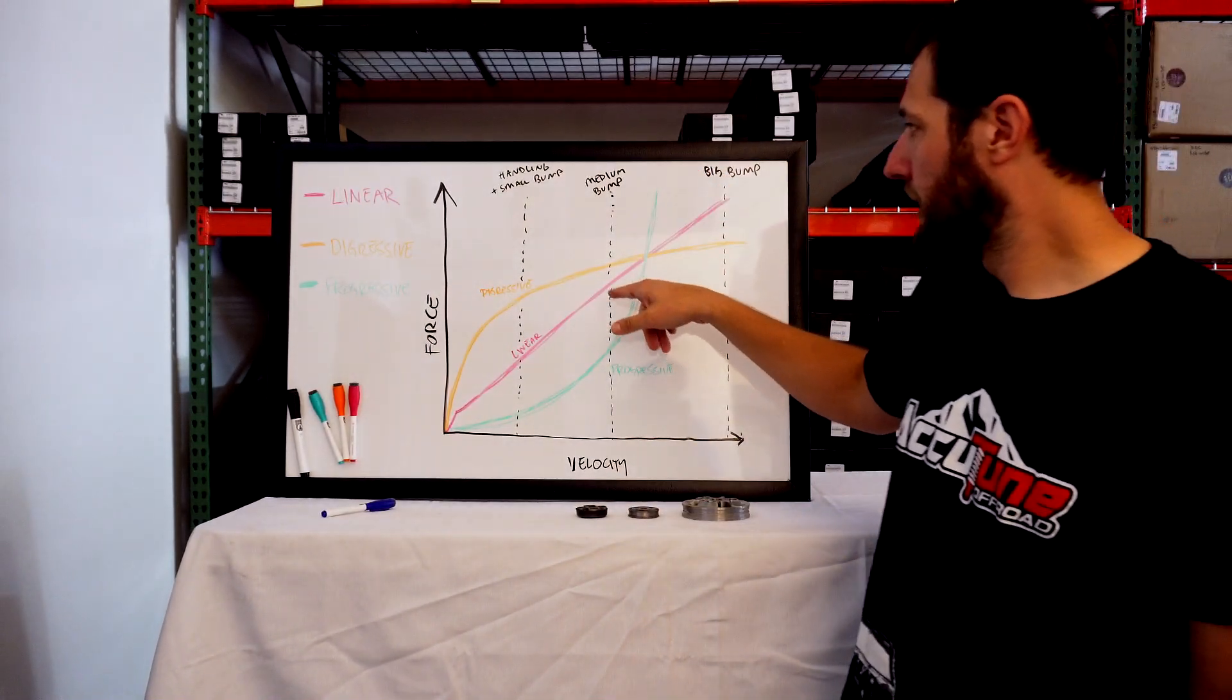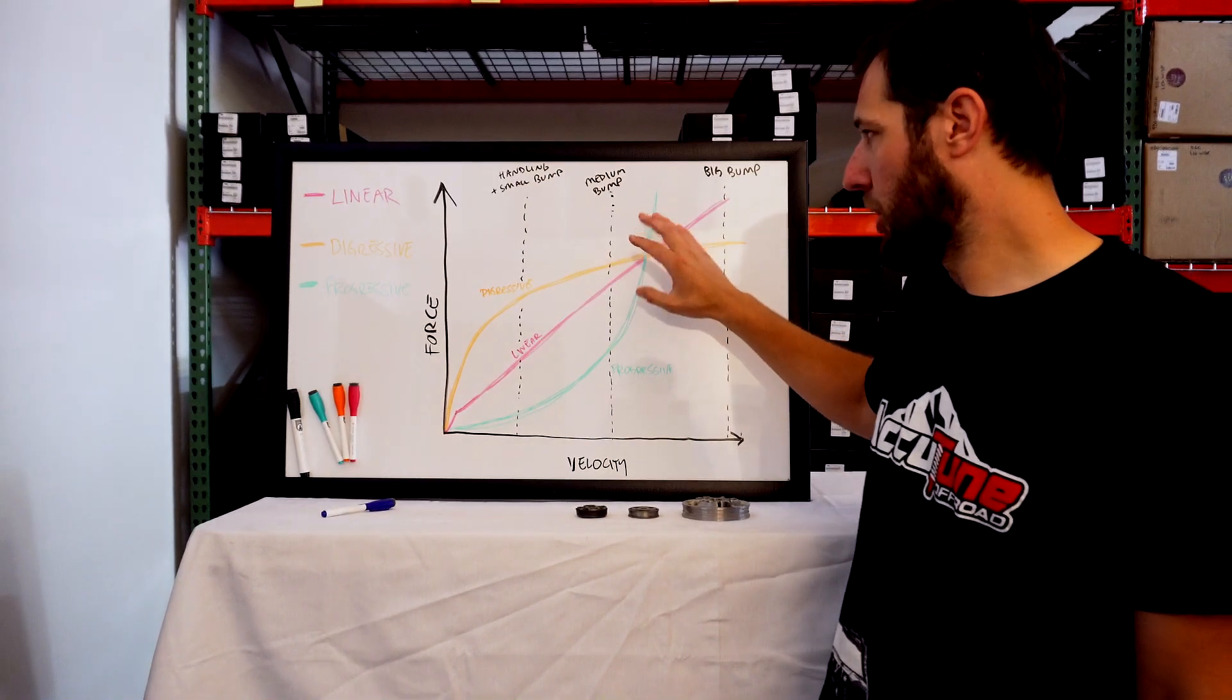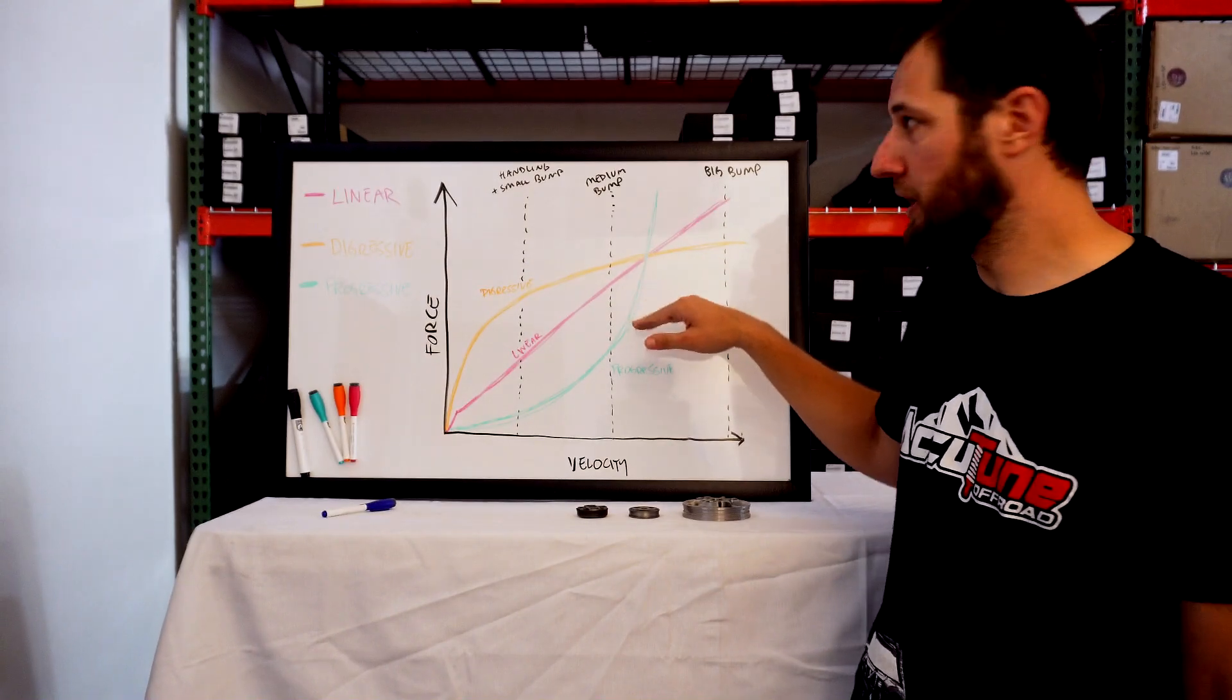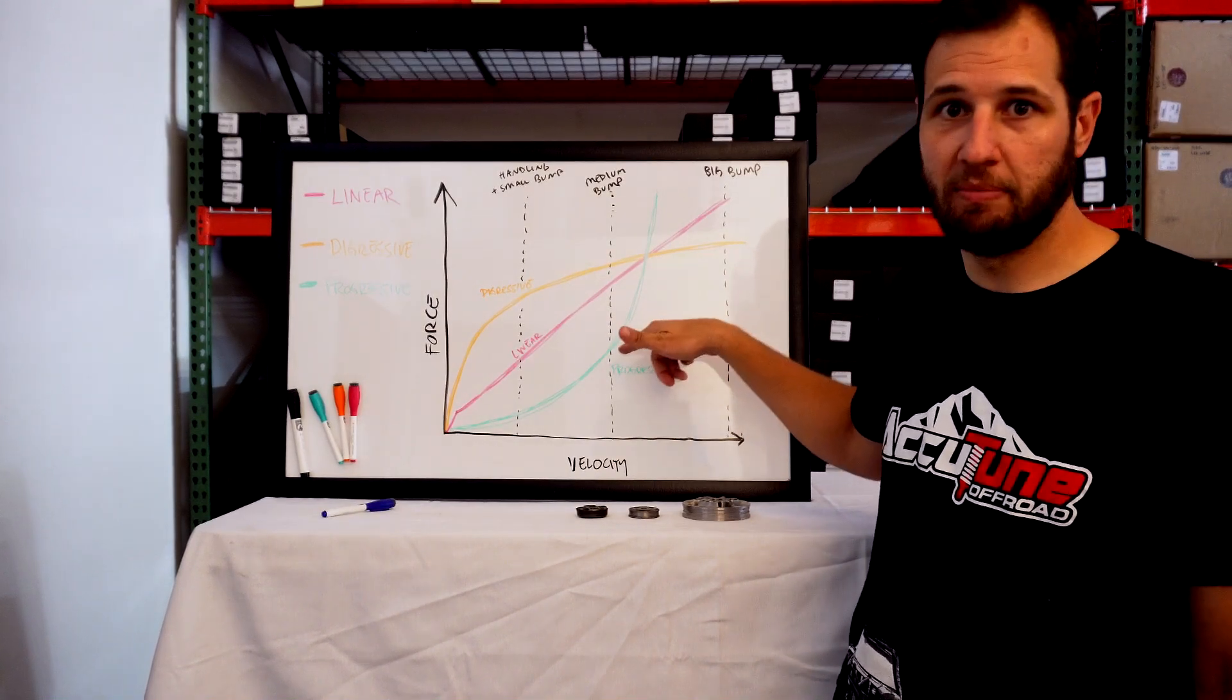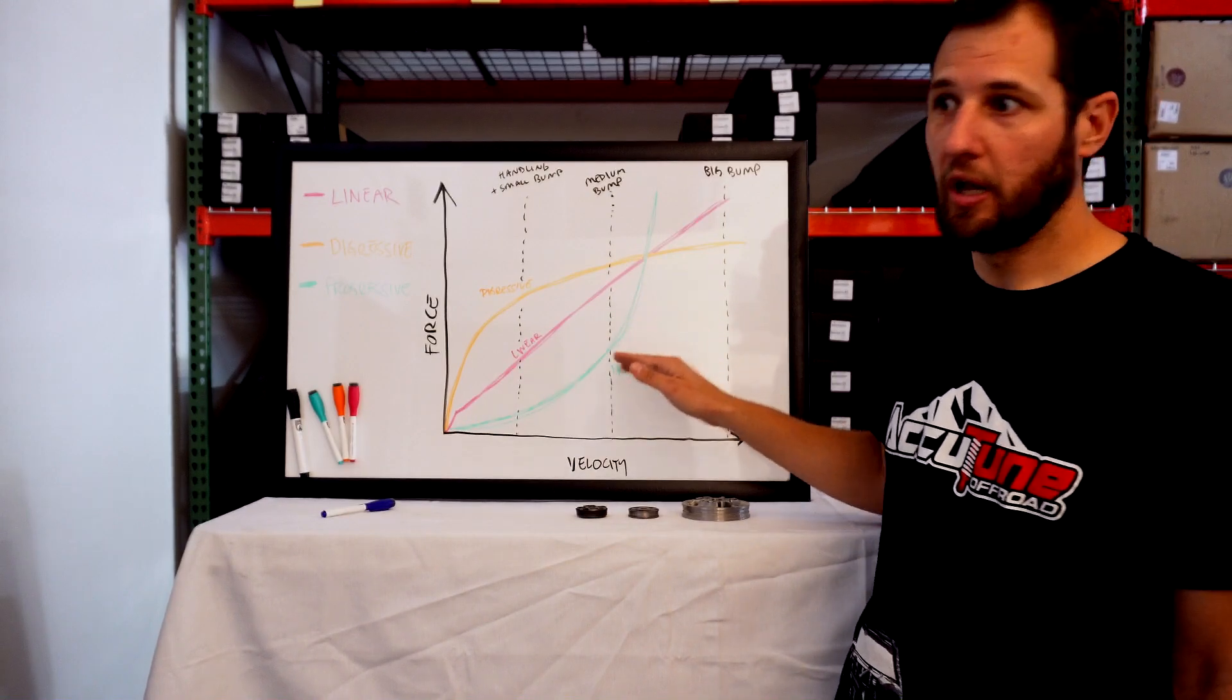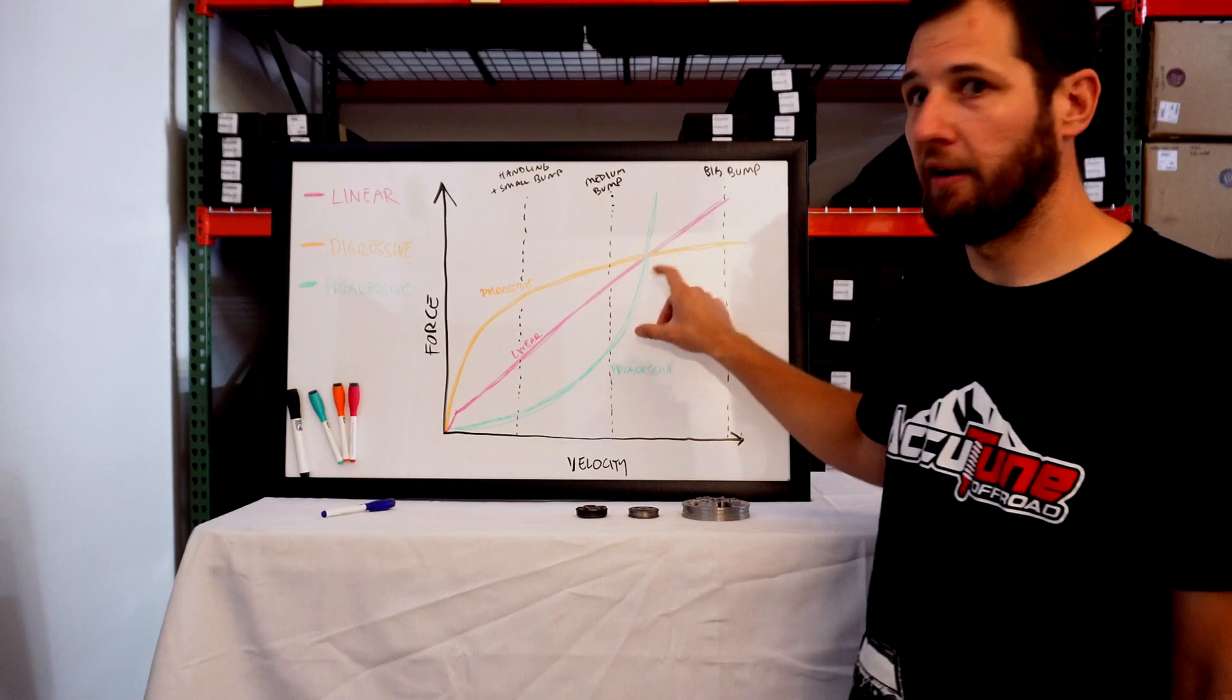Next, medium-sized bump. Again, digressive is making a little bit more force, maybe not a whole lot more. Obviously it depends a little bit on tuning. The graph, as you can see, is not all that representative. Progressive still is going to be pretty soft. That's why you often see bypass shocks, so we get a firmer zone if we're hitting this sort of stuff.